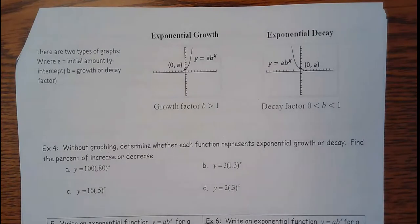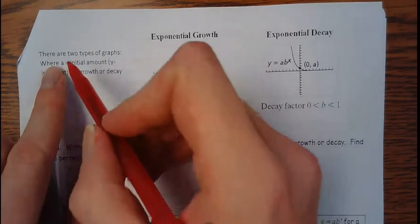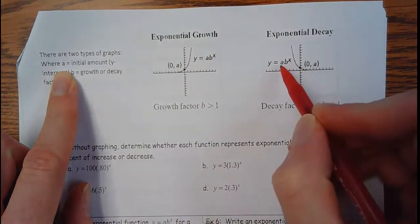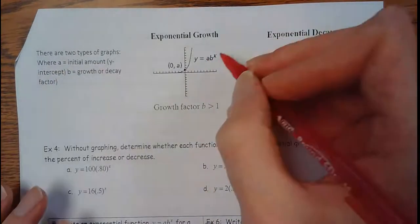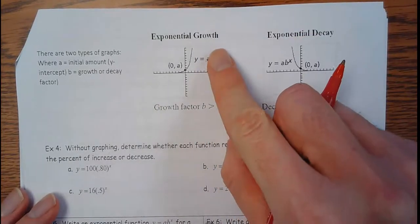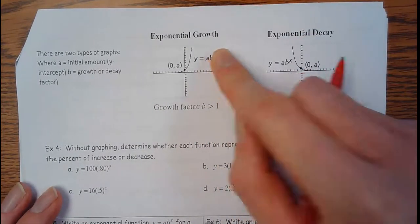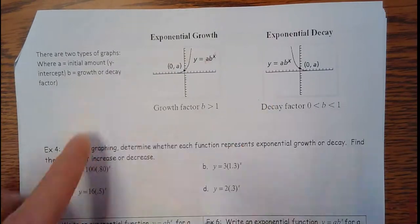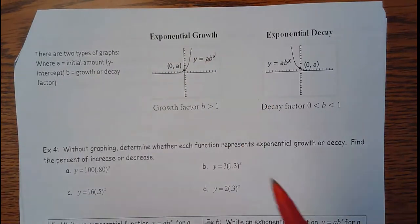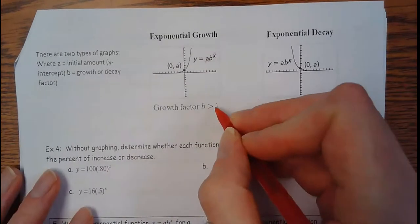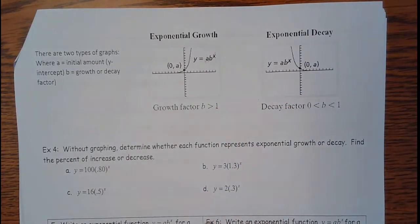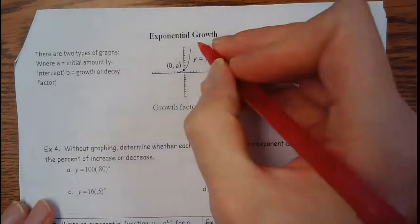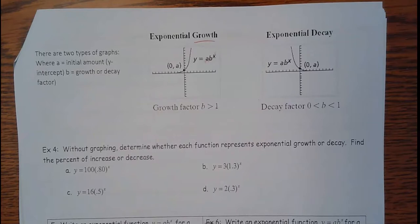Now there are two types of exponential graphs here. And if you notice a, that a right there is always going to be the initial value. Because if I plug a zero for x, this b to the zero is one. So it just gets rid of it. One times a is a. So that is always going to be the initial value. B is the growth or decay factor. So that's going to tell you how fast it grows or decays. It's also what you're multiplying by every time. So if b is greater than one, that means you're taking an amount and you're multiplying by something more than one. It's going to get bigger and bigger and bigger. And that's what makes growth.